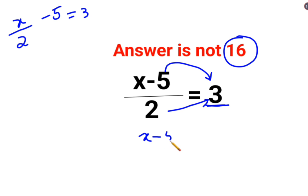So you will have x-5 equals to multiplying both sides by 2. So 3 multiplied by 2. So you have x-5 equals to 6.